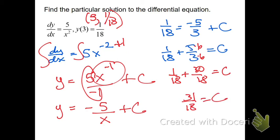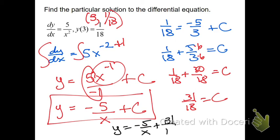So we get 31 18th for c. And again, remember, that's not the answer. The answer is what you get when you plug it back in over here. So my final answer would be y equals negative 5 over x plus 31 18th. Yup, that's what it is.